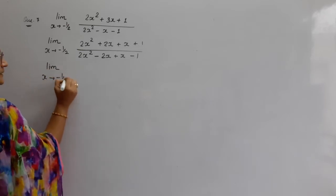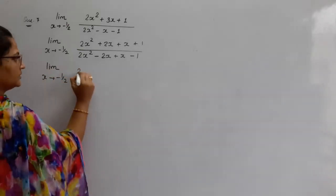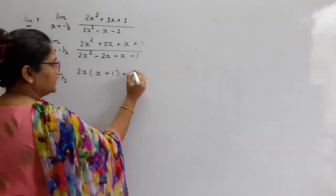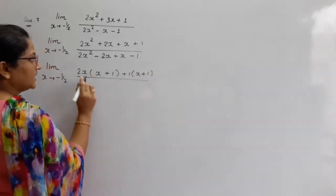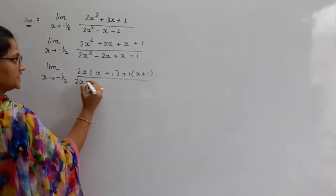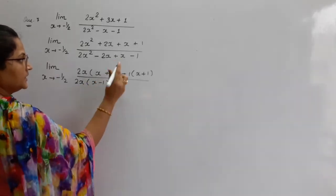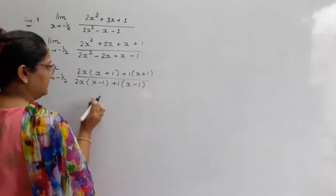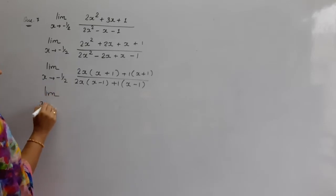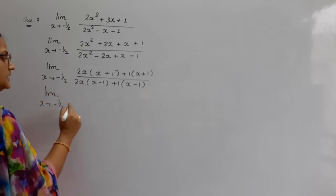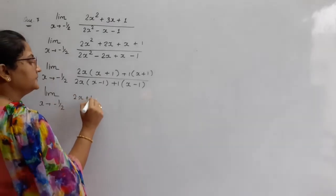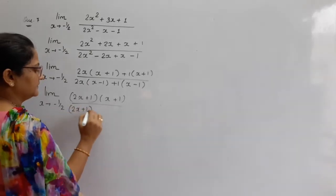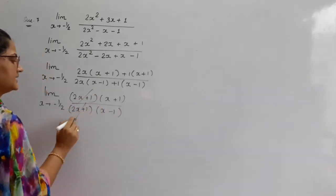Here I am doing minus 2x plus 1x minus 1. So plus minus what happens? Minus. And since 2x is bigger, it's the bigger sign. So minus x comes. Limit x tends to minus half. 2x common nikaalo. Bacha kya? x plus 1. Plus 1 common nikaalo. Bacha kya? x plus 1.